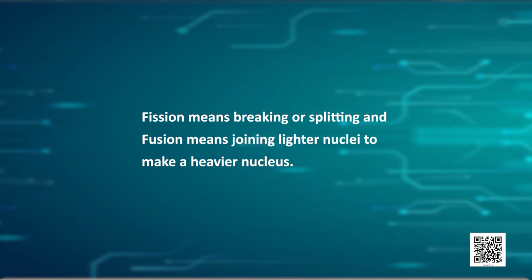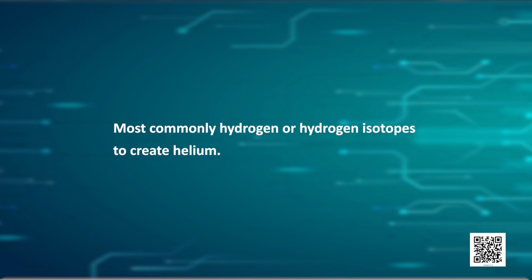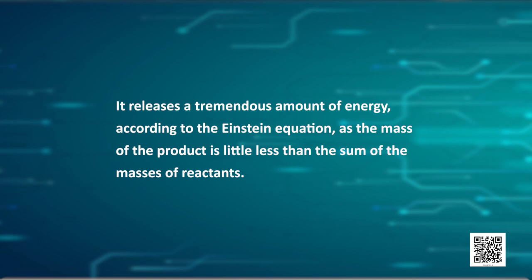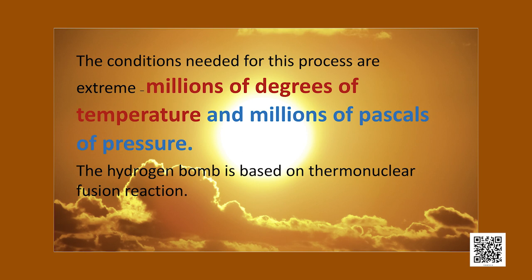Fission means breaking or splitting, and fusion means joining lighter nuclei to make a heavier nucleus — most commonly hydrogen or hydrogen isotopes to create helium. It releases a tremendous amount of energy, and according to Einstein's equation, as the mass of the product is a little less than the sum of the masses of the reactants, the energy released is enormous. The conditions needed for this process are extreme — millions of degrees of temperature and millions of pascals of pressure. The hydrogen bomb is based on a thermonuclear fusion reaction. The sun, which is the ultimate source of energy, has nuclear fusion generating that enormous energy.